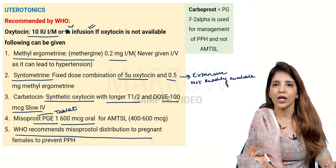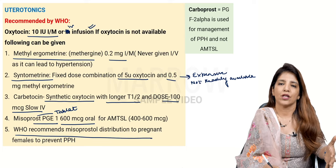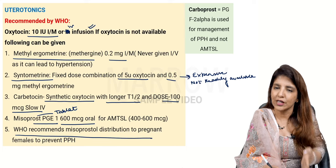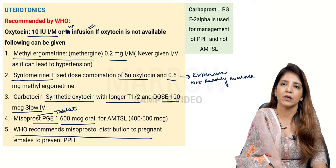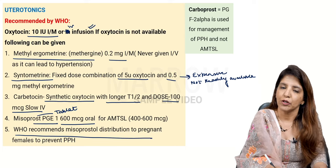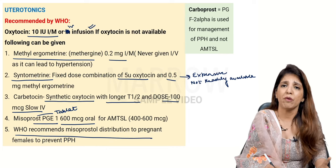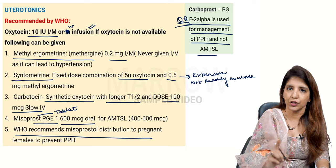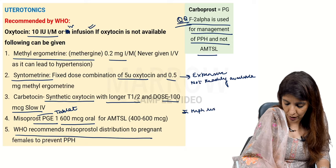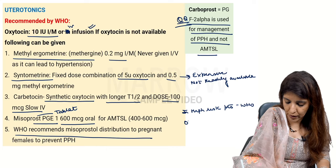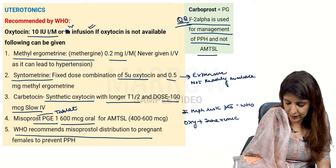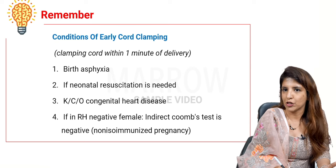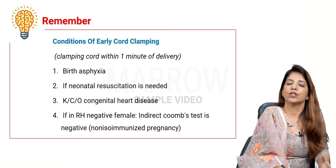Because misoprostol is in tablet form, WHO recommends it in remote areas where institutional delivery is not possible — it can be given in the antenatal period so that if a patient bleeds, she can take it orally. Carboprost, which is PGF2 alpha, is used for management of PPH and is not used in active management of third stage of labor. In high-risk patients, WHO recommends a combination of oxytocin plus tranexamic acid for AMTSL.